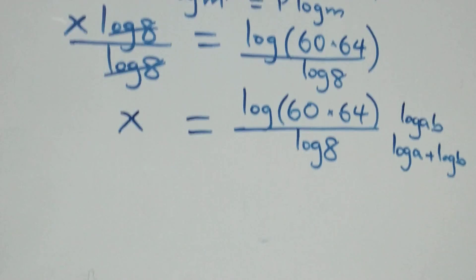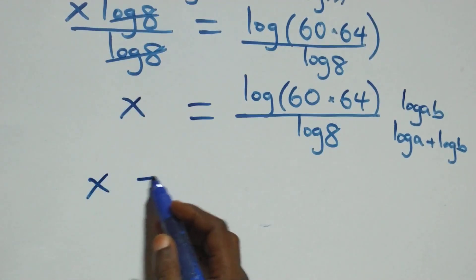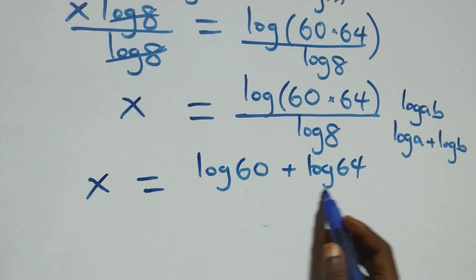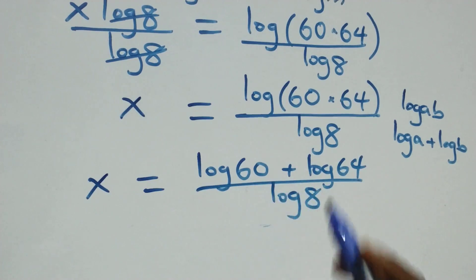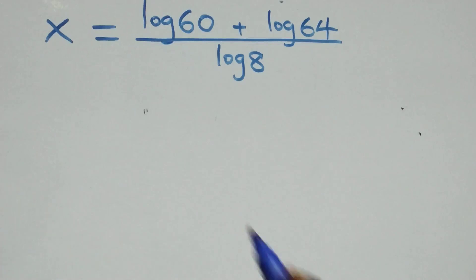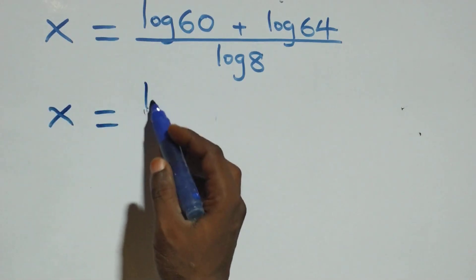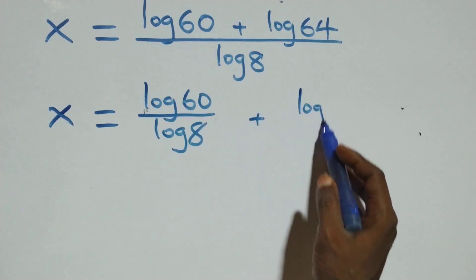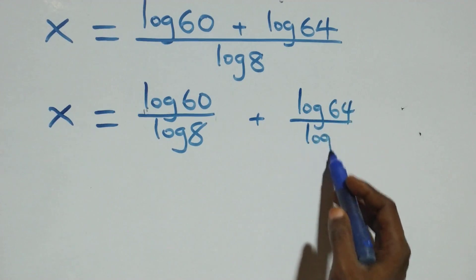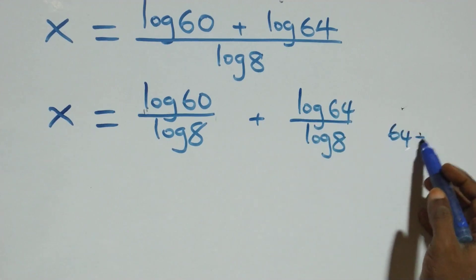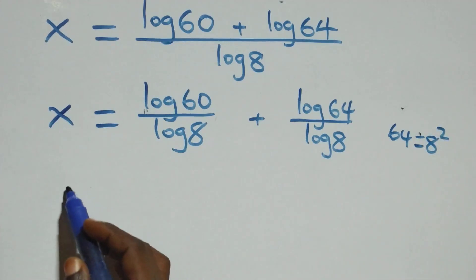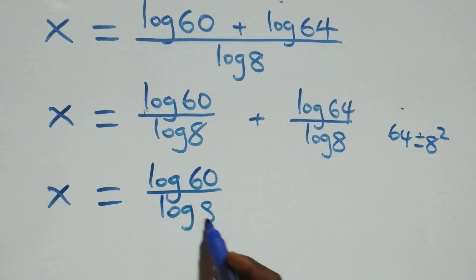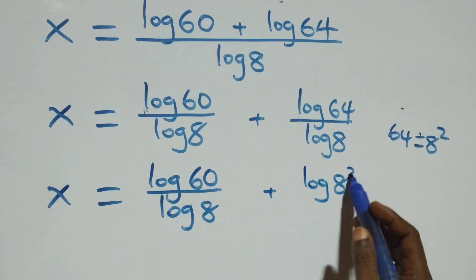Applying the product rule, x equals log sixty plus log sixty-four, all over log eight. Also, sixty-four is eight times eight, which is eight squared. So we have x equals log sixty over log eight plus log eight squared over log eight.